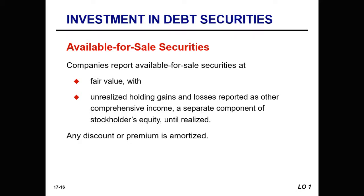Next, we're going to talk about available-for-sale securities. Companies report available-for-sale securities at fair value. The unrealized holding gains and losses related to the changes in value for available-for-sale debt securities are recognized as other comprehensive income and are reported as a separate component of stockholders' equity until they're realized — so until they're actually sold and there is a real gain or loss.